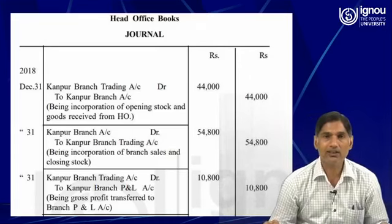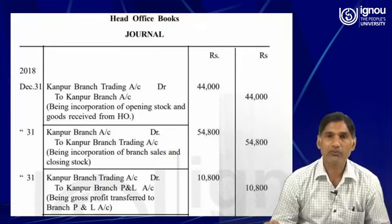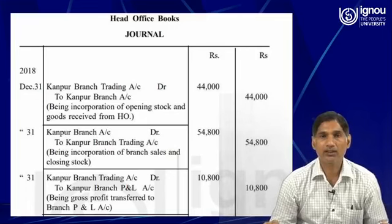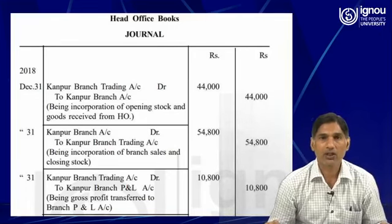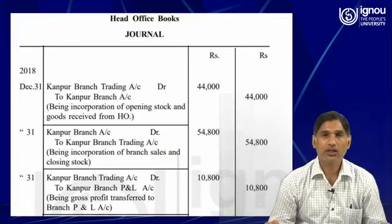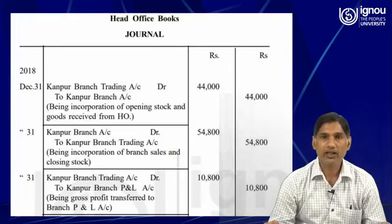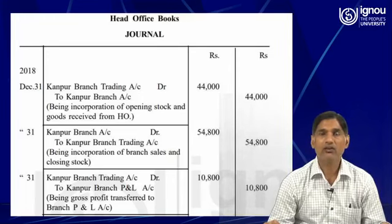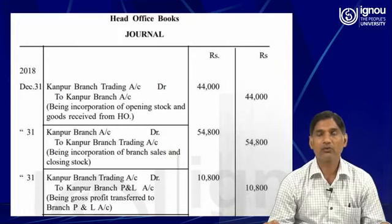the journal entry would be: Kanpur branch profit and loss account debit to Kanpur branch. Here, instead of writing the word 'trading account,' we will write the word 'profit and loss account.'